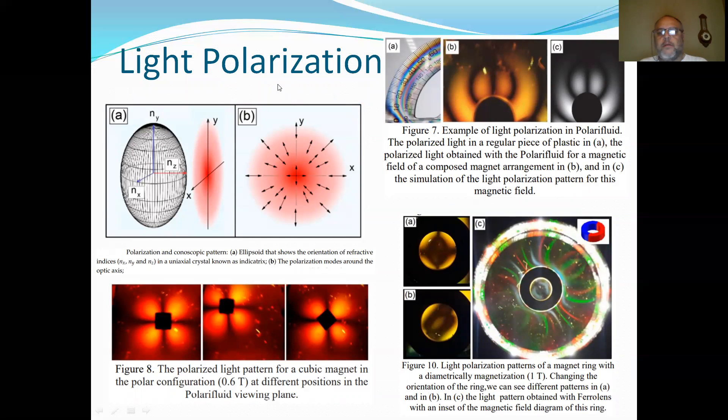Now, we talk about light polarization. The ferrofluid can give this effect of light polarization when we apply the external magnetic field. When we apply the external magnetic field, we discover this effect in this system.